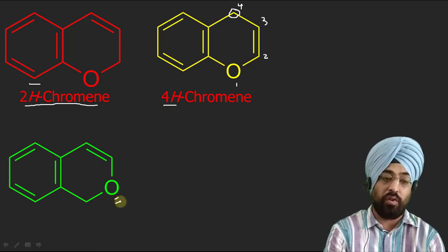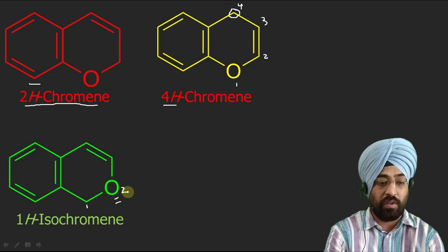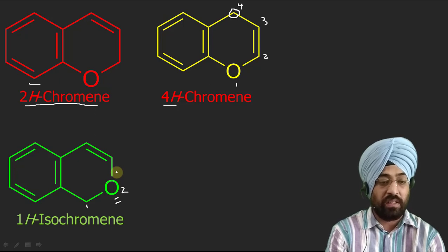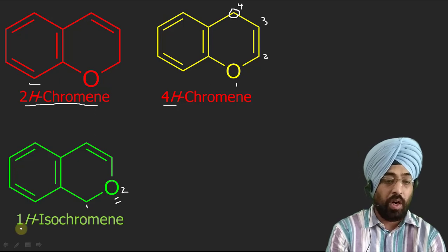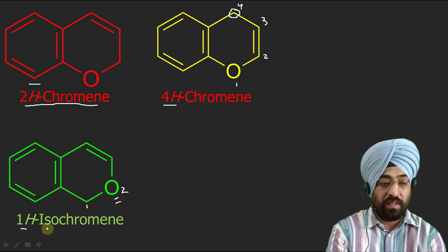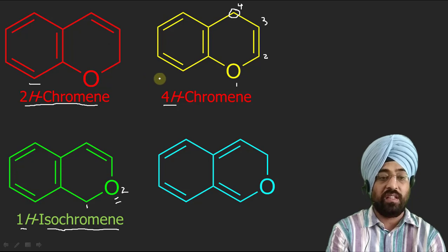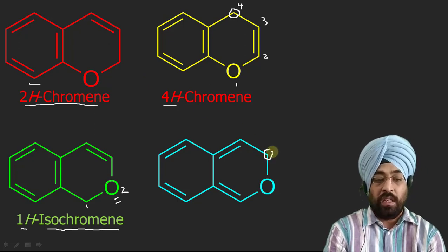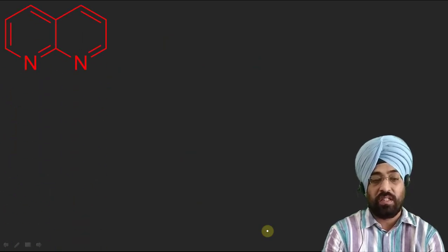Now this is chromene and this is isochromene. If oxygen is at this position it is called isochromene, and you can guess it is the 1H isomer because the numbering starts from here. There are rules for how to number these fused heterocycles — I will discuss them when covering fusion nomenclature. So it is 1H-isochromene. This will be the 3H isomer — the saturated carbon is at the third position, making it 3H-isochromene.